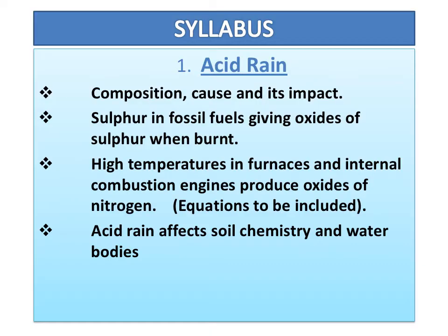Under this we are going to discuss: No. 1 - Acid rain. Its composition, cause and impact. Sulphur in fossil fuels gives oxides of sulphur when burnt. High temperatures in furnaces and internal combustion engines produce oxides of nitrogen. Acid rain affects soil chemistry and water bodies.